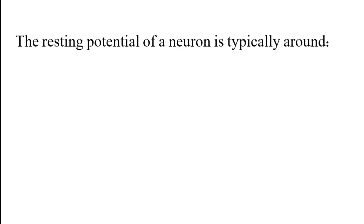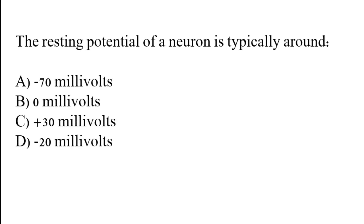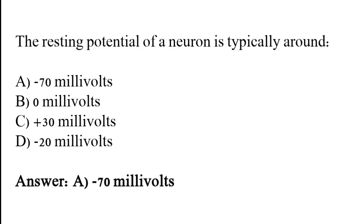The resting potential of a neuron is typically around which value? The correct answer is option A. The resting potential of a neuron is typically around minus 70 mV.